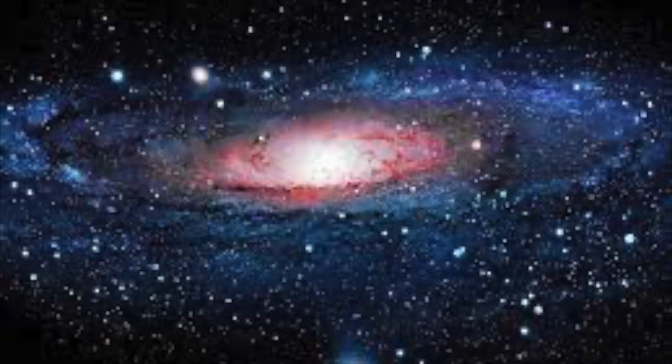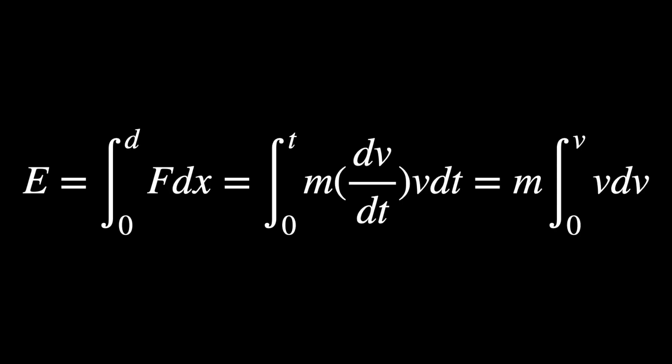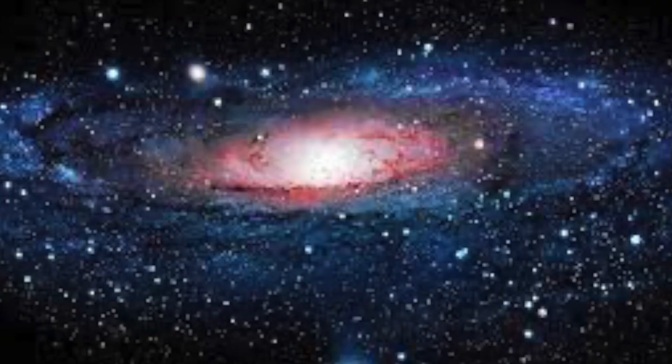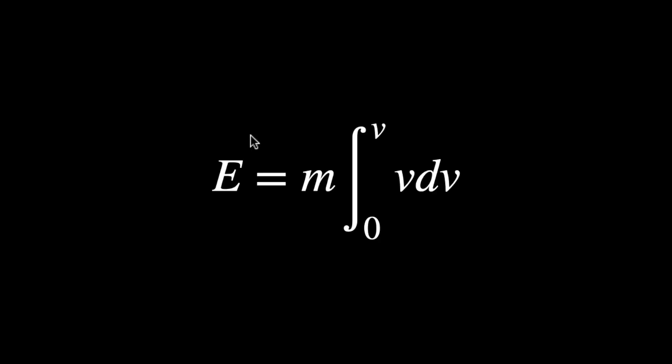From classical mechanics, we can easily derive the following. Energy is related to work done, which is the integral of f dx from 0 to d. By changing a variable, we arrive at the final form, E is equal to m multiplied by the integral of v dv from 0 to v.